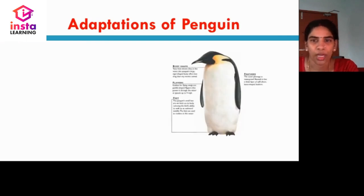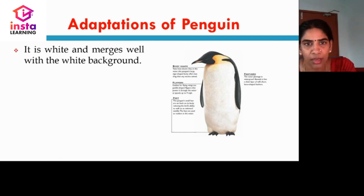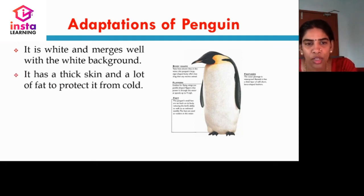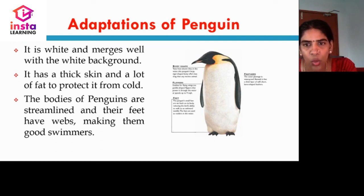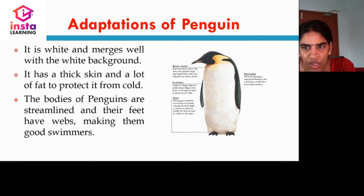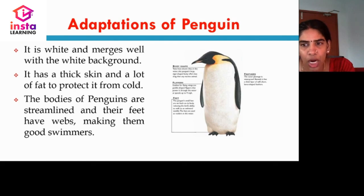Let us see the adaptations of the penguin. Penguins are also white in color and merge well with the white background. They have thick skin and a lot of fat to protect them from cold — similar to polar bear adaptations. Their bodies are streamlined and their feet have webs, making them good swimmers. Their wings are paddle-shaped flippers that power them through the water at speeds up to 9 mph. Their outer plumage is waterproof, and below it is a thick layer of stiff feathers.